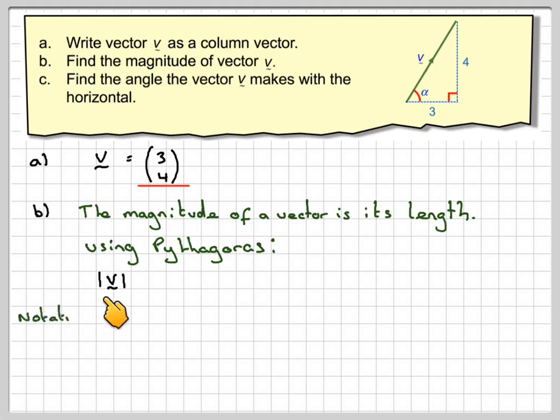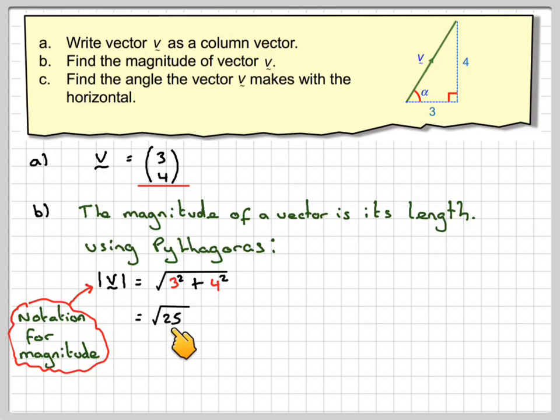And then therefore the magnitude, and this is the notation, we have two straight lines with the vector in between. So, the notation for magnitude, it's going to be equal to the square root of 3 squared, plus 4 squared. And that's the square root of 25, and the square root of 25 is 5 units.